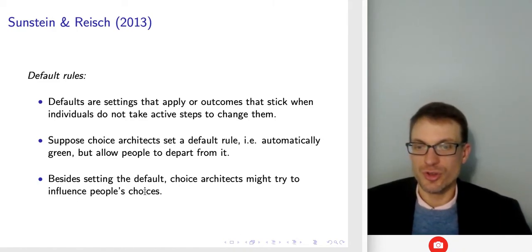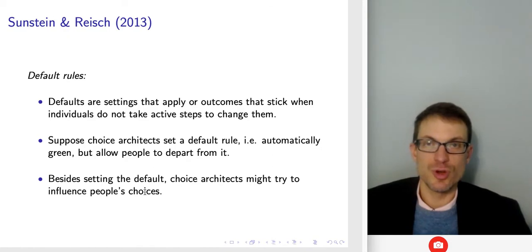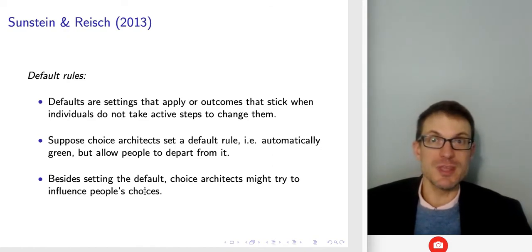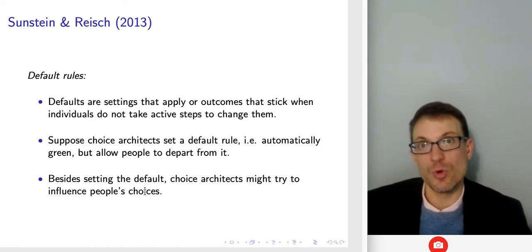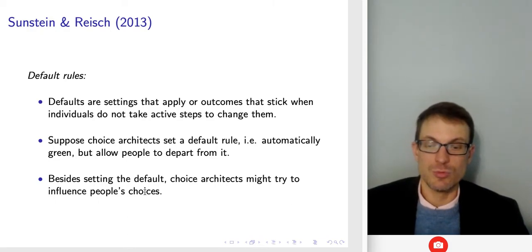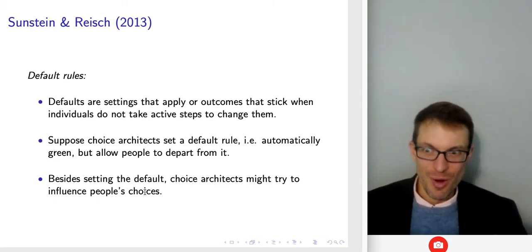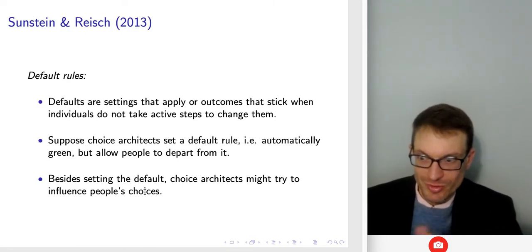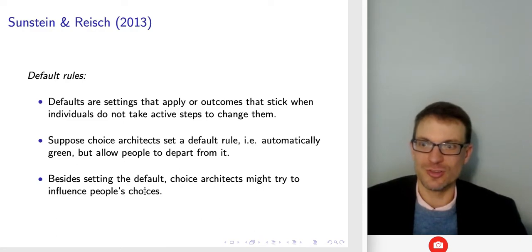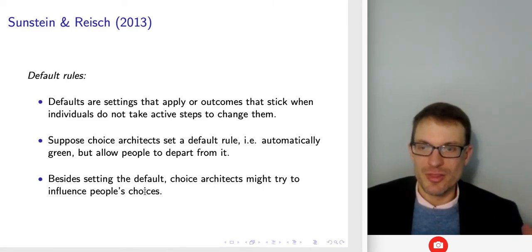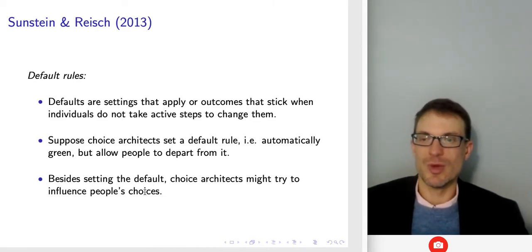Besides setting the default rule, choice architects might try to influence people's choices by not setting a default but requiring them to make a choice — telling them the good and bad things on both sides. One combination is active choosing plus self-conscious framing to encourage either green or gray. An example analogous to organ donation: when getting your driver's license, you have to choose one way or the other, and then we tell you all the good things about being an organ donor — that's active choosing plus self-conscious framing.